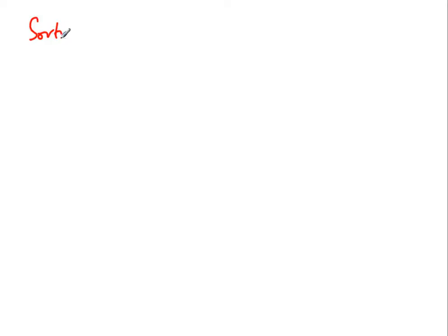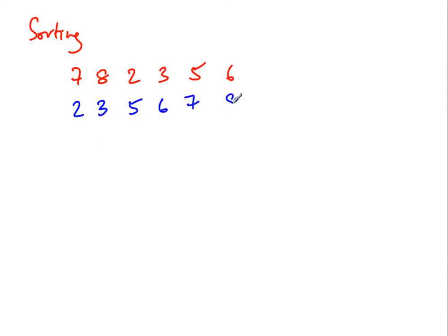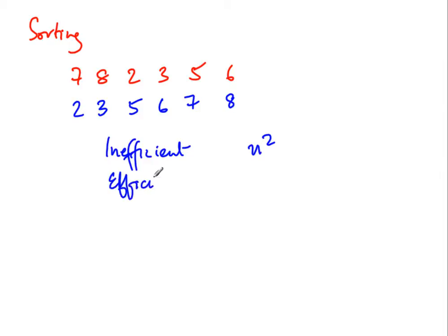To get a feel for this, let us look at a concrete example: sorting. We have a list of numbers and we want to rearrange them in sorted order, say ascending order. There are inefficient algorithms and efficient ones. The inefficient algorithms take time proportional to n squared, where n is the number of elements in the array, and the efficient ones take time proportional to n log n.